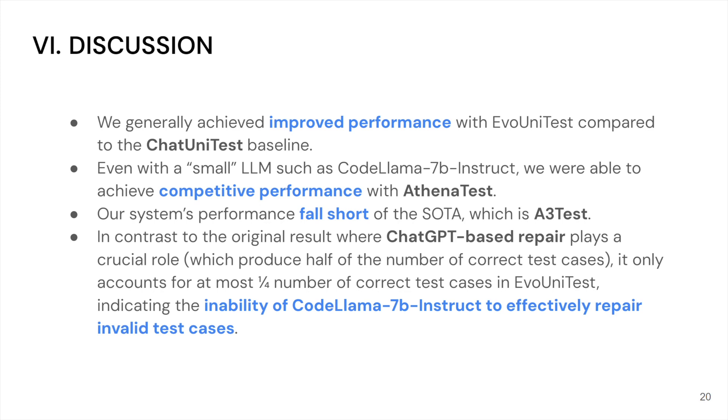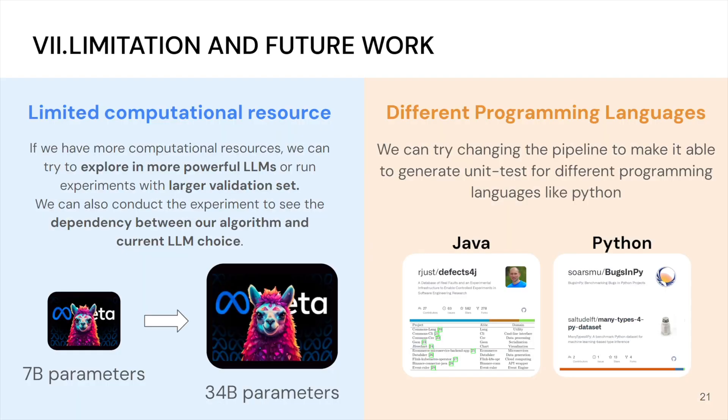So, in the original ChatUnitTest, they actually used ChatGPT, which is a large language model with more than 175 billion parameters. And our CodeLlama 7B Instruct, our language model only has like 7 billion parameters. So, it cannot as effectively repair the invalid test cases as ChatGPT.